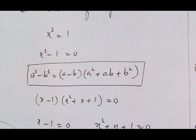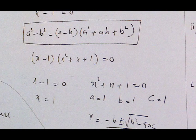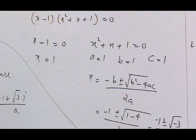We apply the formula for a³ - b³ = (a - b)(a² + ab + b²), putting a = x and b = 1. The linear equation gives x = 1, and we apply the quadratic formula to the quadratic equation, where a = 1, b = 1, and c = 1.